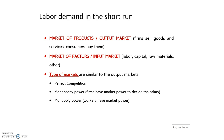All what we have learned in the market of products, also called the output market, we are going to transfer this knowledge to the market of factors. In the market of products we were studying how firms sell goods and services and how consumers decide to buy them. The firm had to decide how much quantity to produce and the consumer had to decide how much quantity to buy.